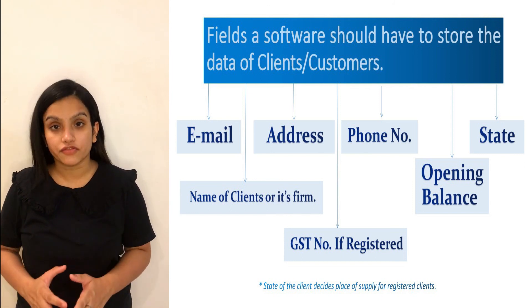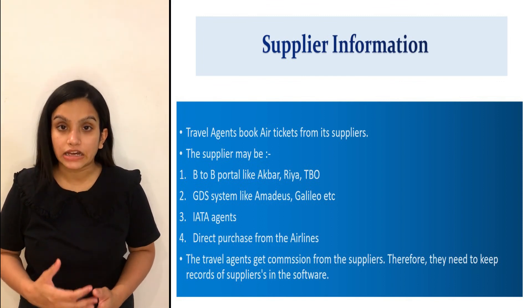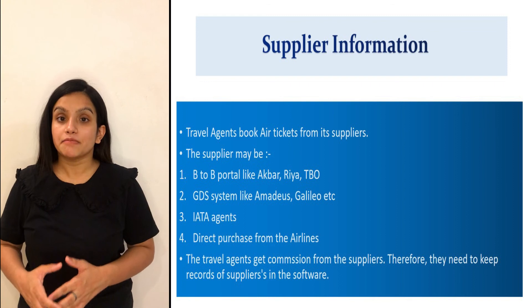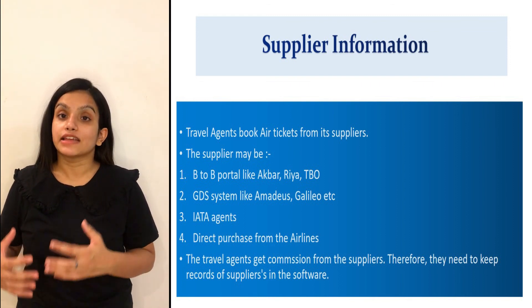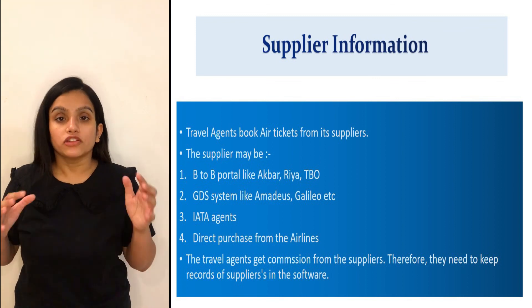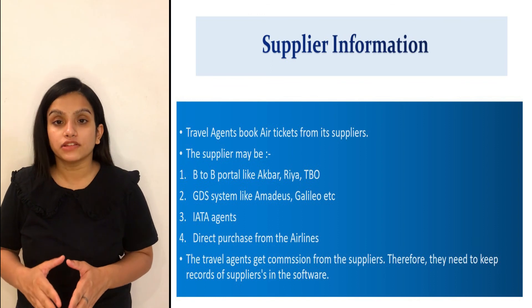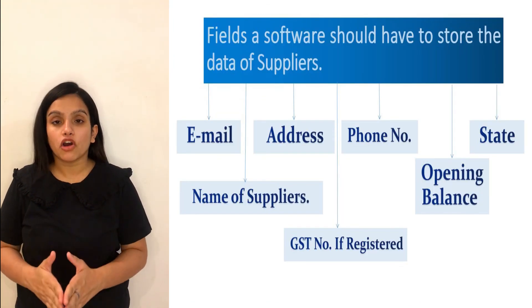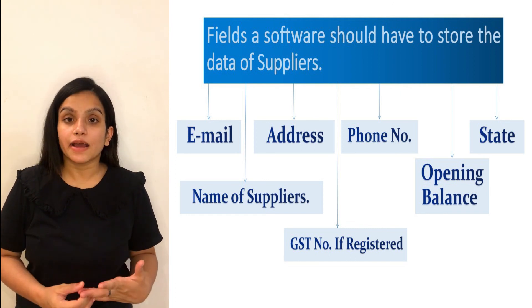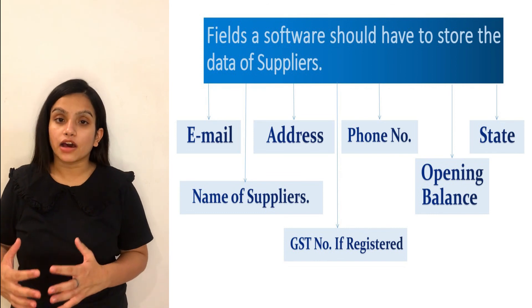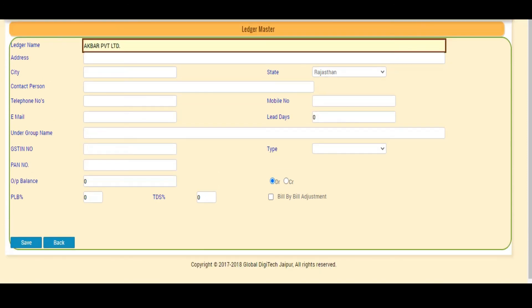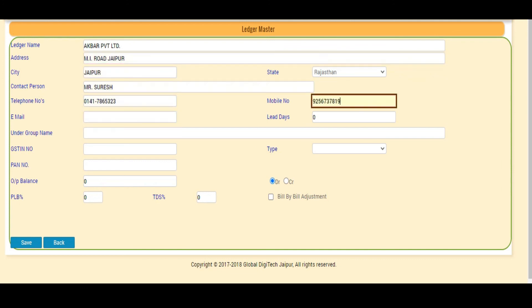The state of the client decides the place of supply if it is a registered firm. A travel agent purchases tickets from the supplier, who may be a B2B portal like Akbar, Ria, or TBO; a global distribution system like Amadeus or Galileo; an IATA agent; or directly an airline. The software should record the supplier's data: name, address, phone number, email ID, state, GST number, and opening balance. Here I am entering the data of my client Mr. Ram and my supplier Akbar Private Limited, filling all mandatory fields and clicking Save.